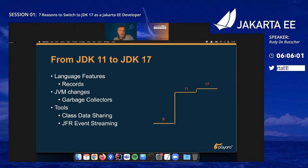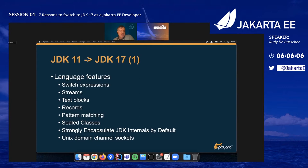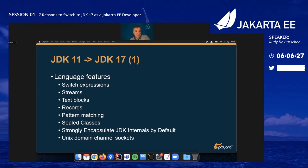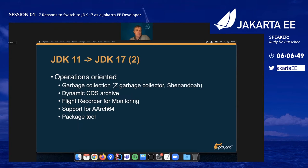I'm going to cover a few of those new language features. I won't cover sealed classes, but I will show examples of JDK internal encapsulation at the demo. I also won't give an example of Unix domain socket channels, which are now standard in the JDK and useful for Docker clients. Beyond language features, there are more operational things like garbage collections, CDS archives — a very nice feature I'll show in the demo — and the Flight Recorder, now also useful for monitoring and not only profiling and diagnostics.